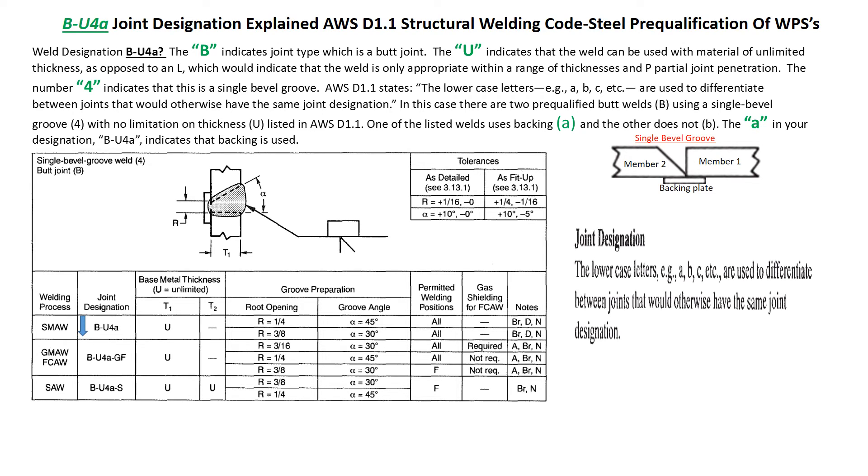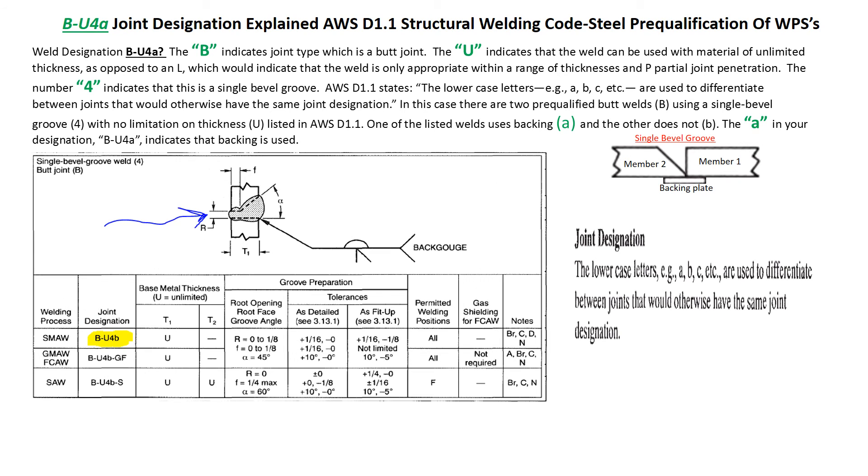So the A lets you know that you will have a backing, and the B will let you know that you will not have a backing. So if you look under AWS D1.1, and you see B-U4B, lowercase B, that means that that joint designation does not have a backing.